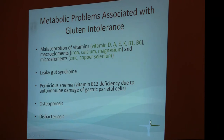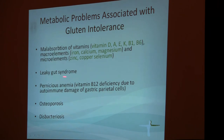Gluten intolerance not only results in various autoimmune problems but also causes metabolic problems, including malabsorption of vitamins — specifically D, A, E, K, B1, and B6 — as well as macro-elements such as iron, calcium, and magnesium, and micro-elements such as zinc, copper, and selenium. We commonly see patients with leaky gut syndrome, pernicious anemia or B12 deficiency, osteoporosis, and severe dysbiosis with yeast overgrowth. These are all typical complications in patients with gluten intolerance who are not on a gluten-free diet.